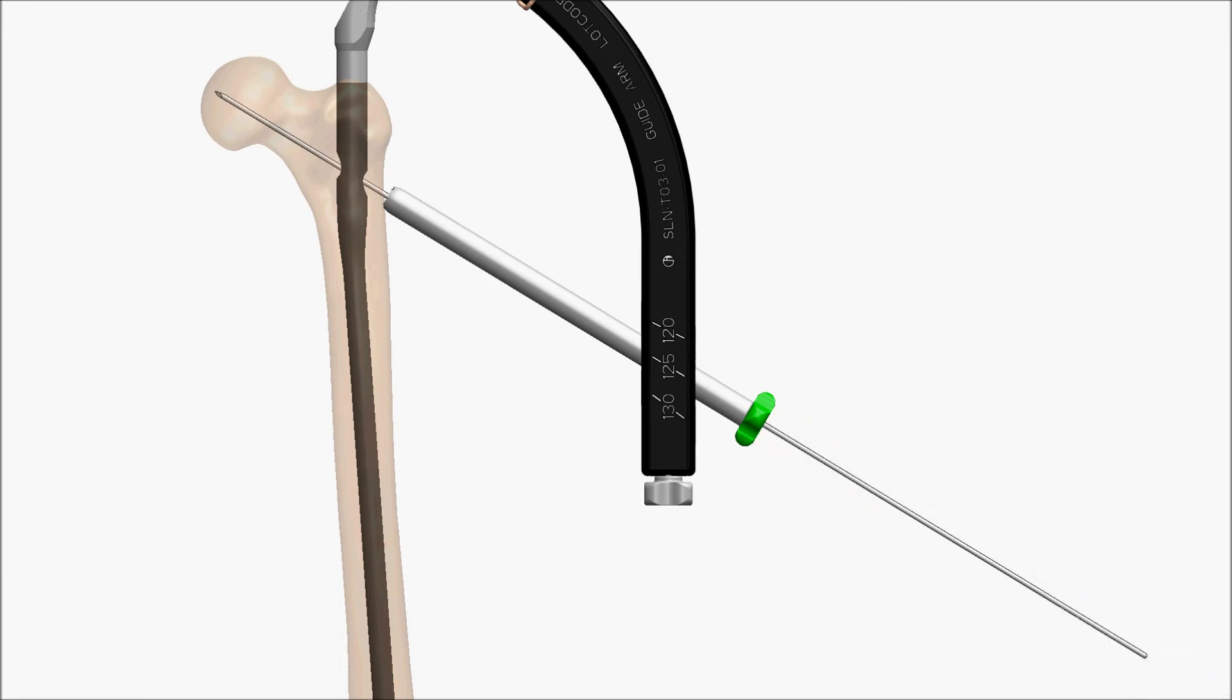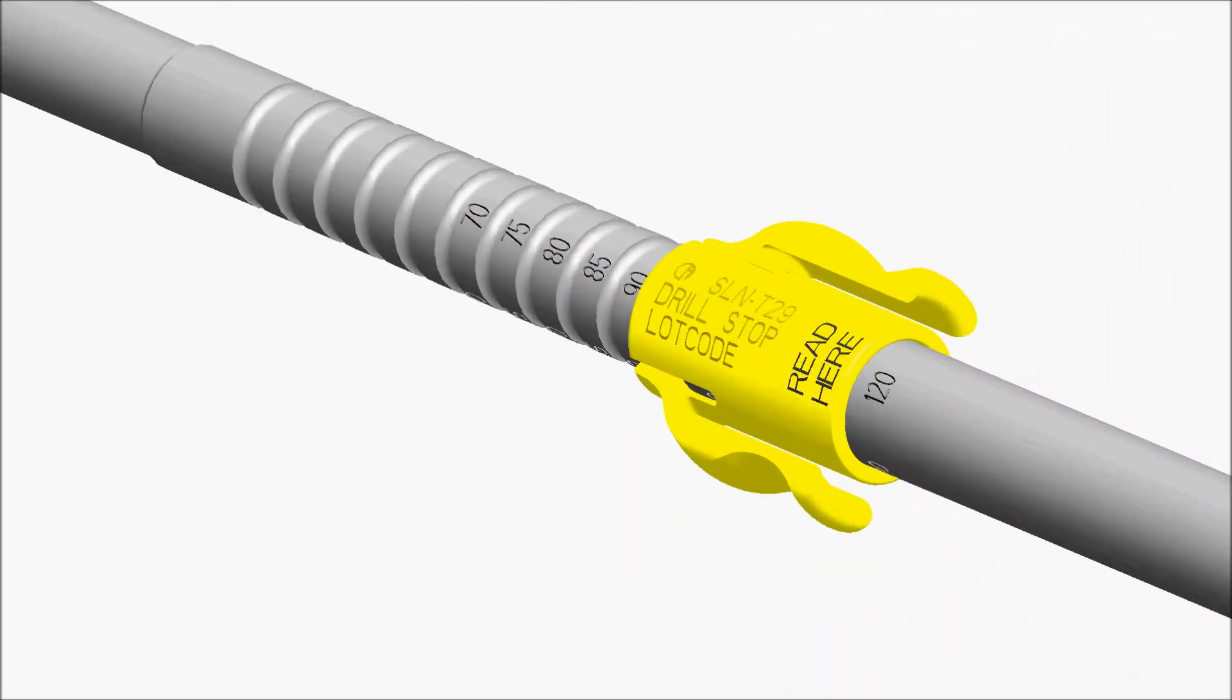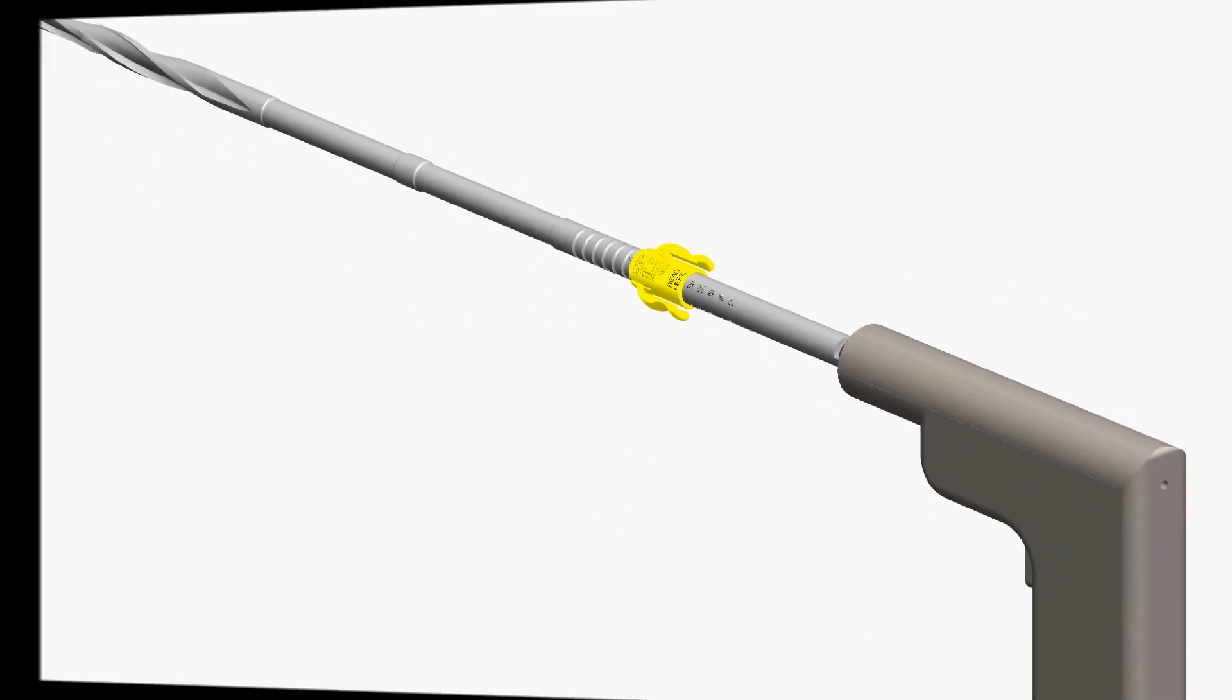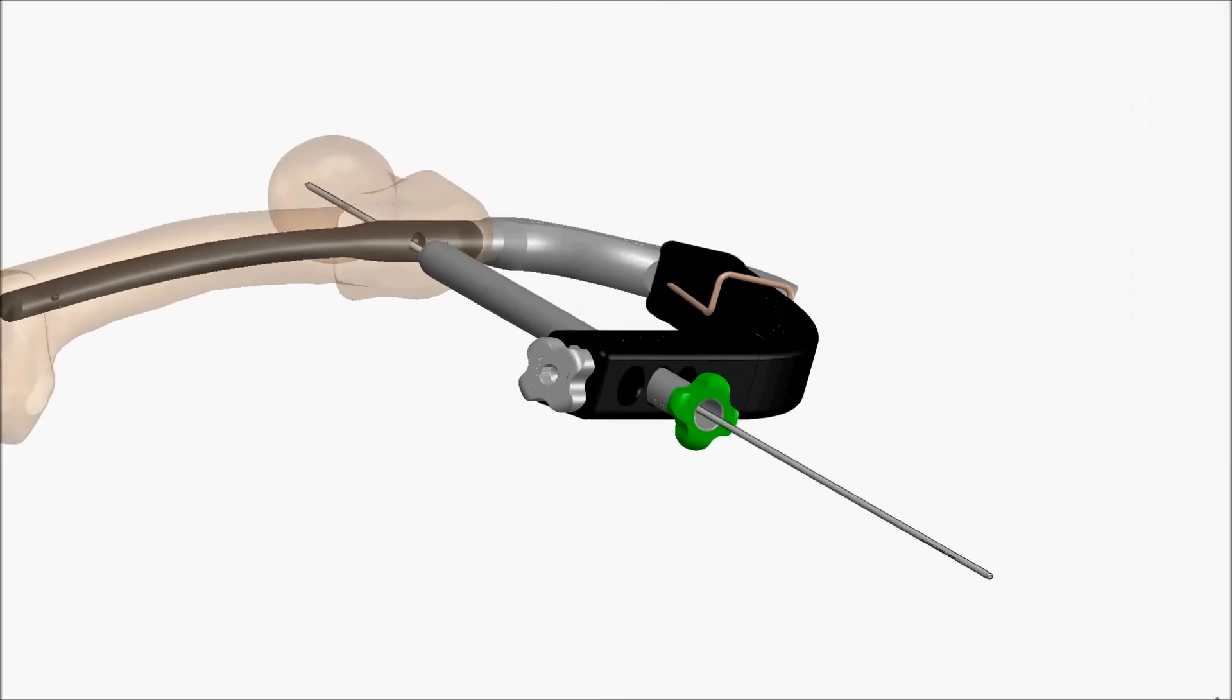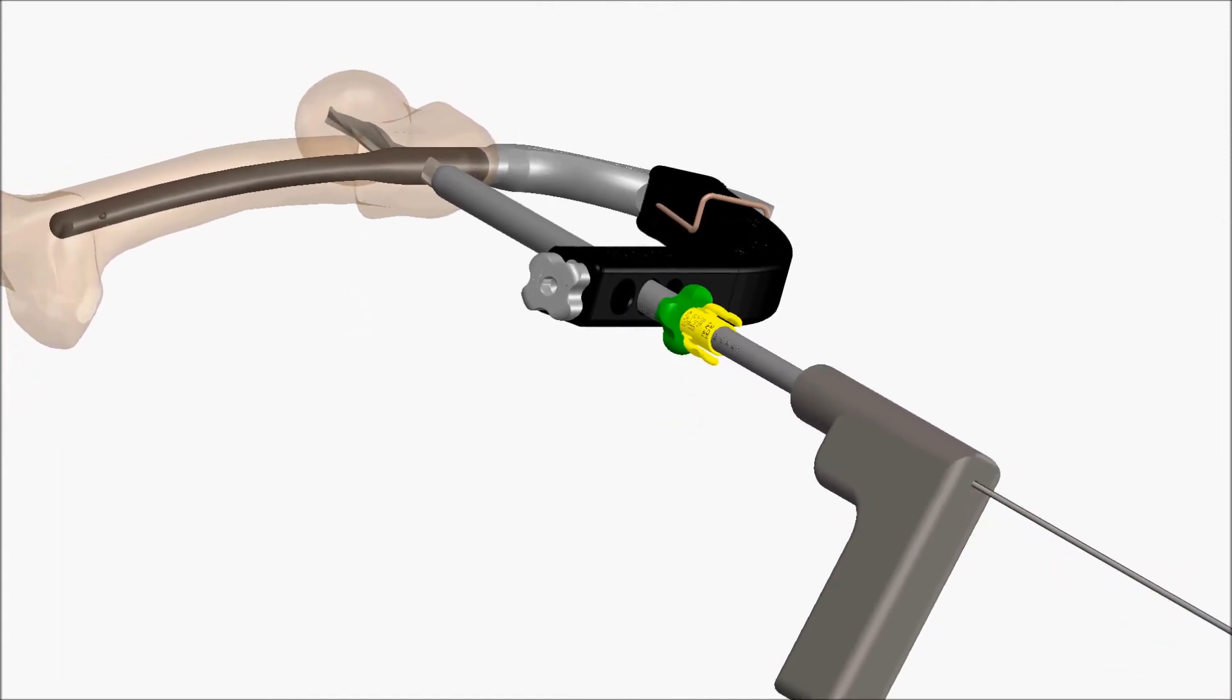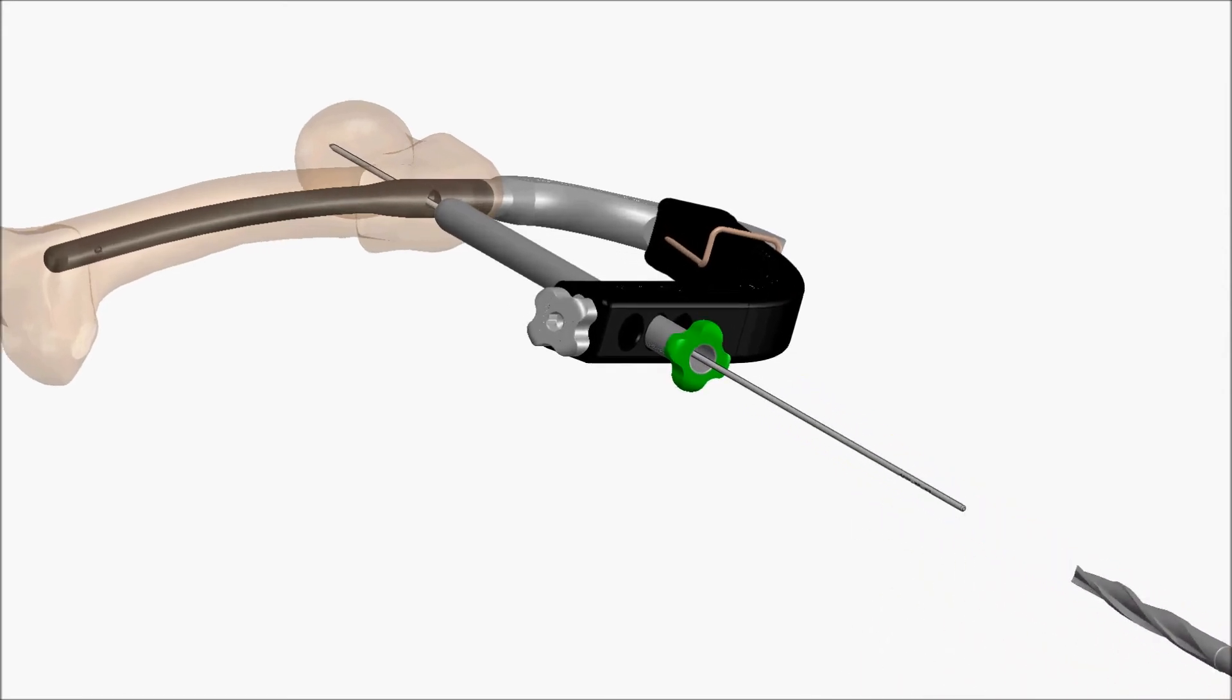Remove the guide sleeve obturator. Set the drill stop to the desired drilling depth. Drill the proximal femur. Use the pin pusher to ensure the guide pin remains in place during drill removal.